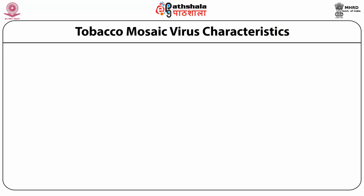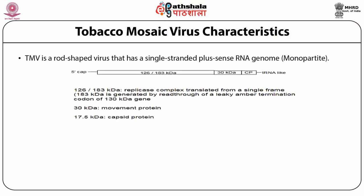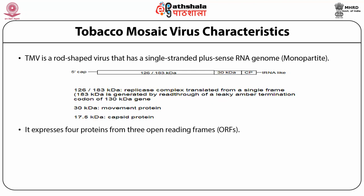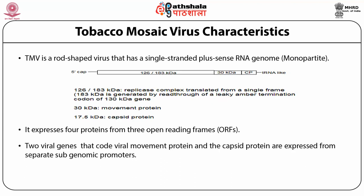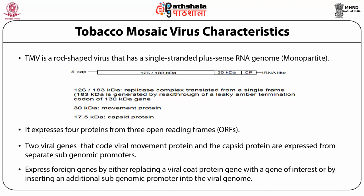Tobacco mosaic virus and its characteristics: tobacco mosaic virus is a rod-shaped virus that has a single-stranded plus-sense RNA genome. It is a monopartite virus whose genome has three open reading frames and codes for four different proteins. Two viral genes that code for the viral movement protein and the capsid protein are expressed from separate subgenomic promoters at the end of this RNA genome. One can express foreign genes by either replacing the viral coat protein gene with a gene of interest or by inserting an additional subgenomic promoter into the viral genome towards the end of the RNA molecule.